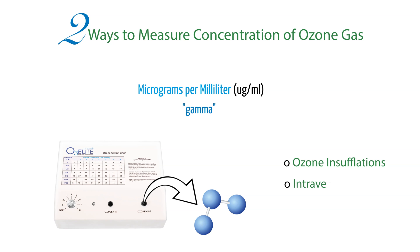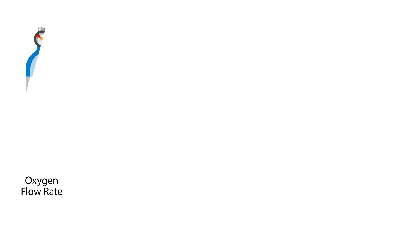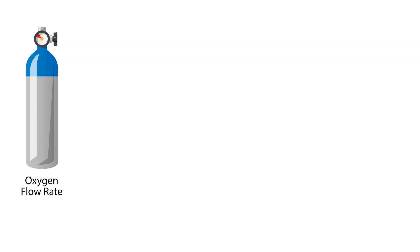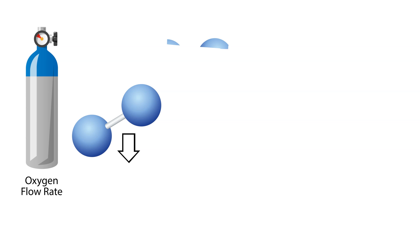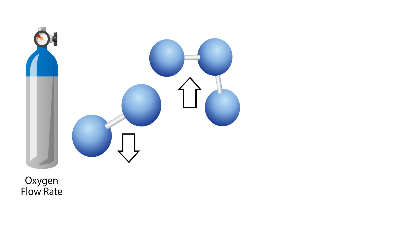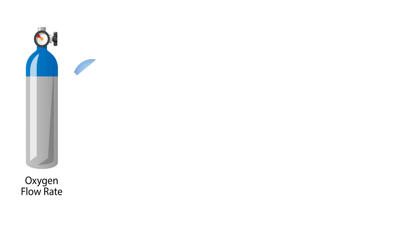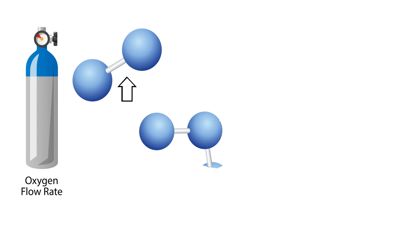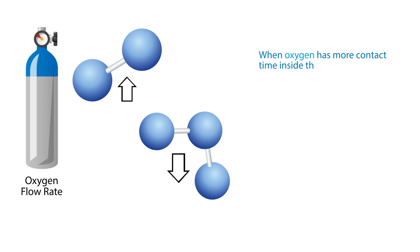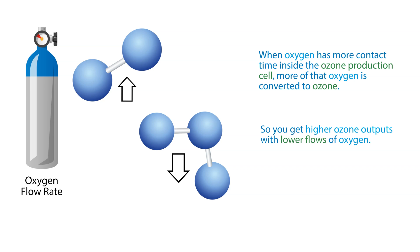This is important because it lets us know how much ozone we are being exposed to. Therapies such as ozone insufflations or intravenous ozone require this form of measurement. The oxygen flow rate is necessary information with this form of measurement. As you lower the oxygen flow, the ozone concentration will increase because the oxygen has more time to be exposed to the ozone creation process. As you increase the oxygen flow, the ozone concentration will decrease because the oxygen moves through the process faster, creating less total ozone. When the oxygen has more contact time inside the ozone production cell, more of that oxygen is converted to ozone, so you get higher ozone outputs with lower flows of oxygen.